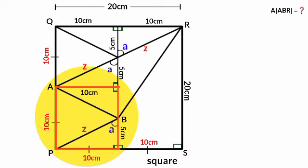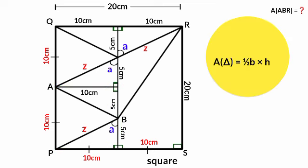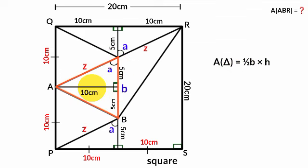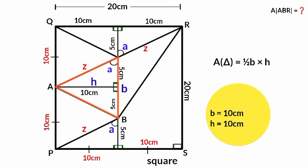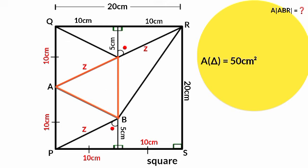In the square, opposite sides are equal, so since one side is 10 centimeters, the corresponding side is also 10 centimeters. Since one part of that side is 5 centimeters, the remaining part is 10 minus 5 = 5 centimeters. Using the triangle area formula — one-half times base times height — the base equals 5 plus 5 = 10 centimeters and the height equals 10 centimeters. So the area equals one-half times 10 times 10 = 50 centimeters squared.